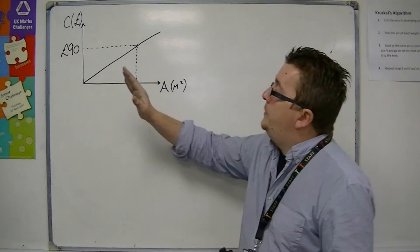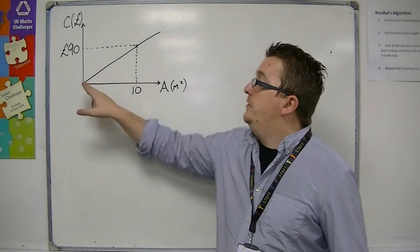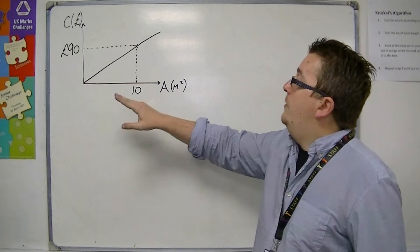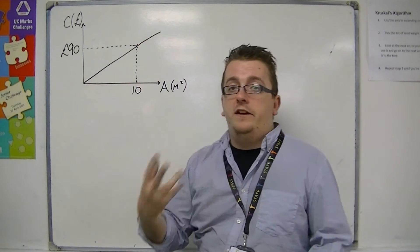Let's say that it is a linear relationship, so linear straight lines starting at 0, 0, and then for every 10 square metres, you must pay £90.